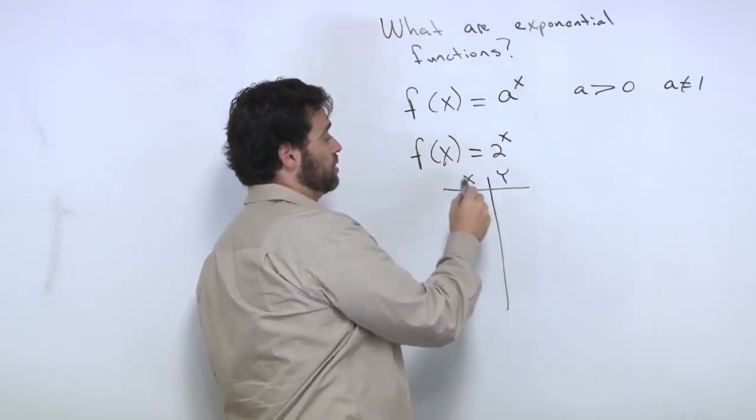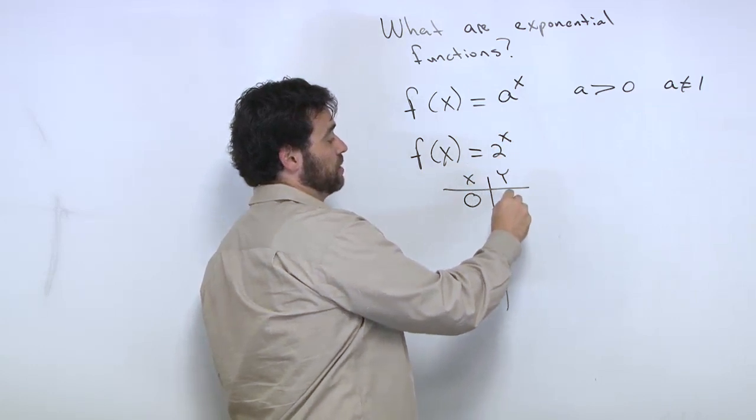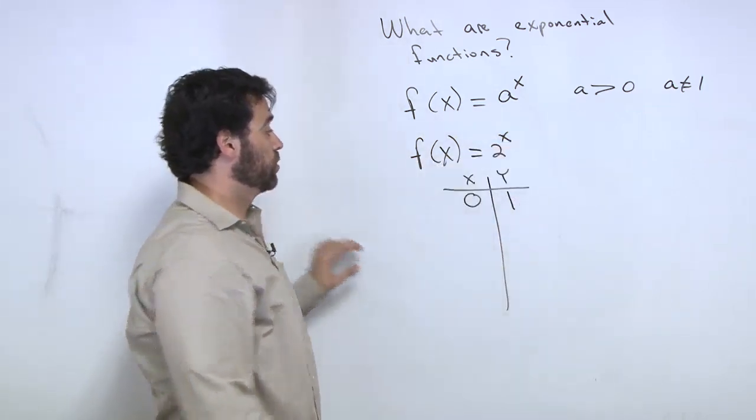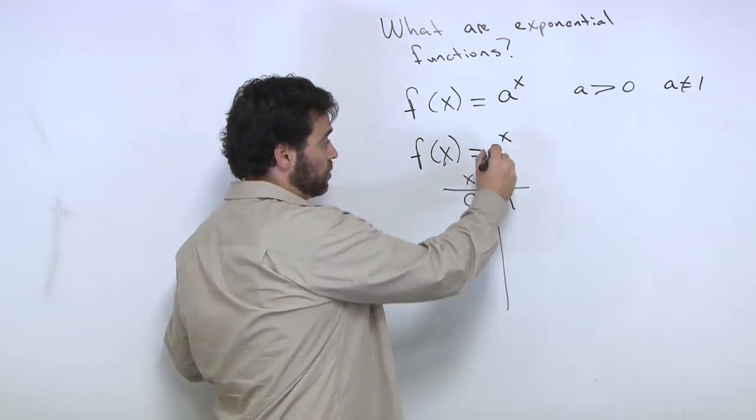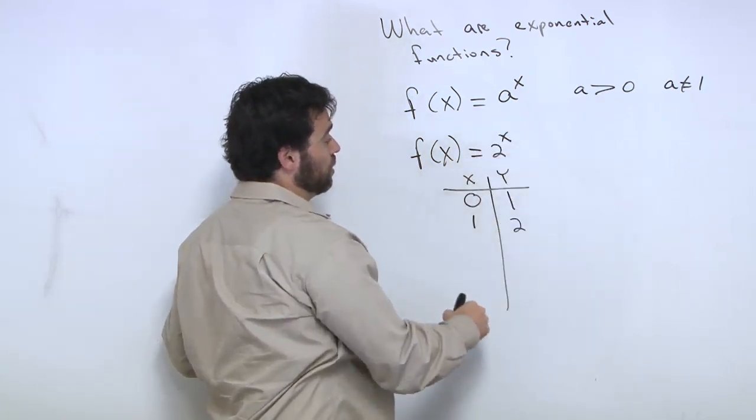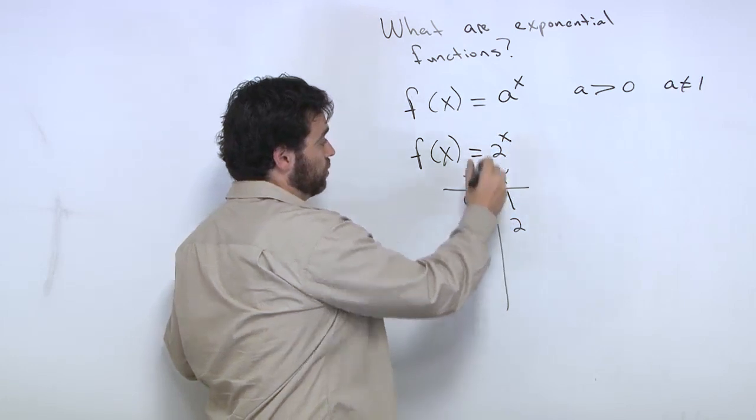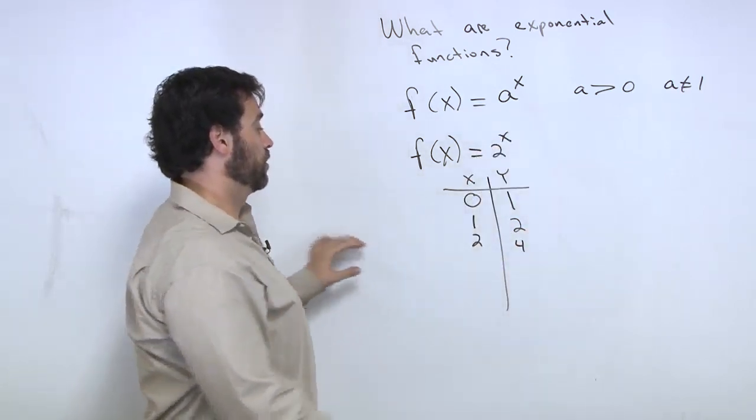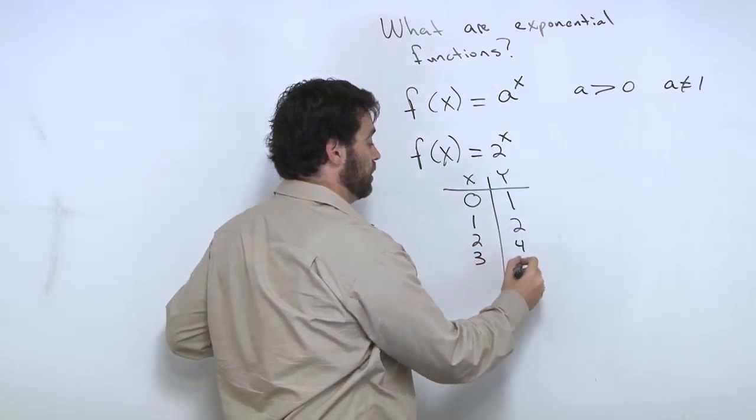So x is 0, 2 to the 0 is 1. Put in 1, 2 to the 1 is 2. Put in 2, 2 to the 2 is 4. Then we go 2 to the 3 is 8.